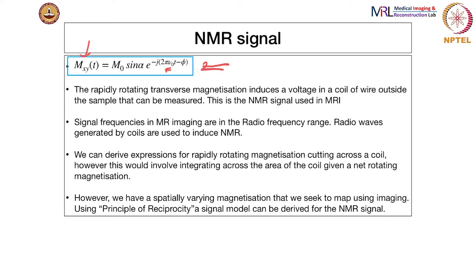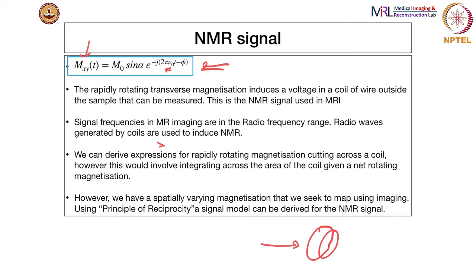We want to relate this induced voltage or EMF to the magnetization, and that relationship will then help us map the magnetization across the volume. We can derive an expression for a rapidly rotating magnetization cutting across a coil. There is a coil of wire, and there is a magnetization M which is rapidly rotating — every time it rotates, it cuts across the coil of wires, and this generates a signal. This involves integrating across the area of the coil.